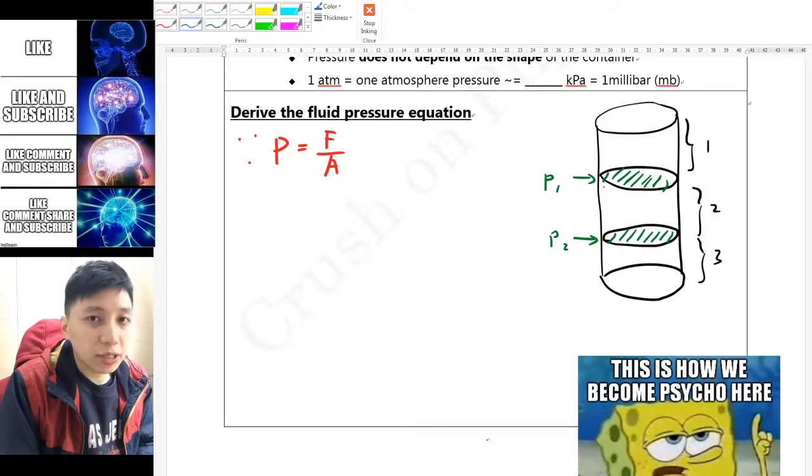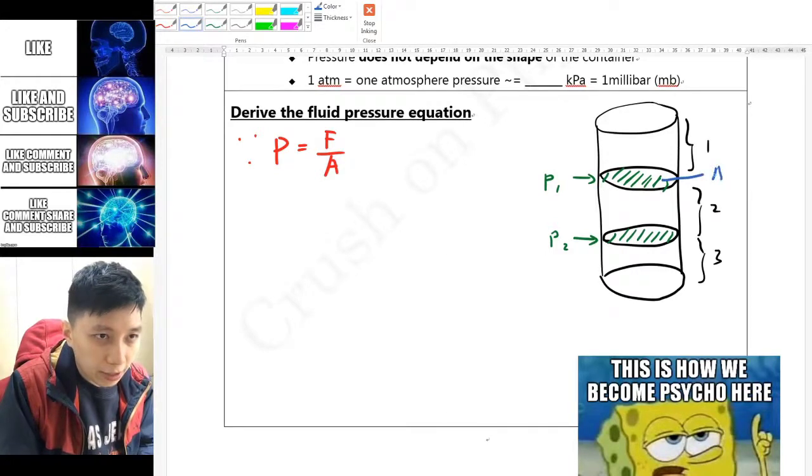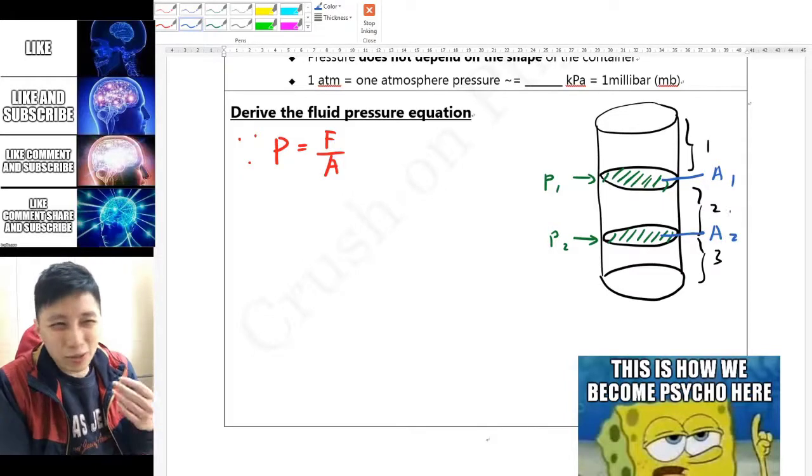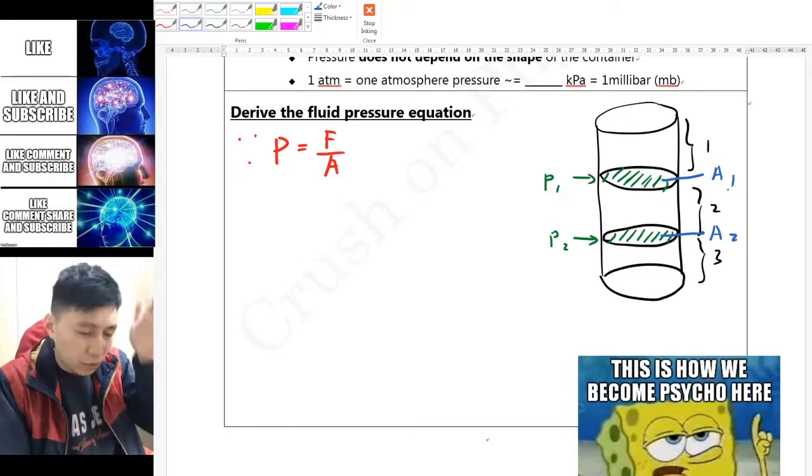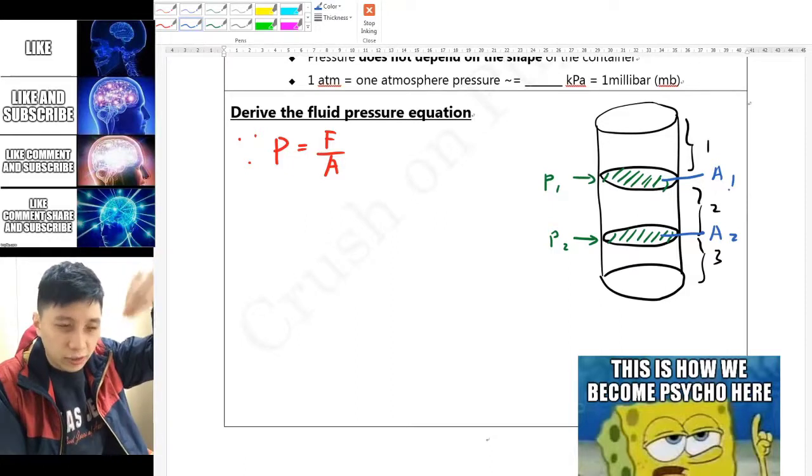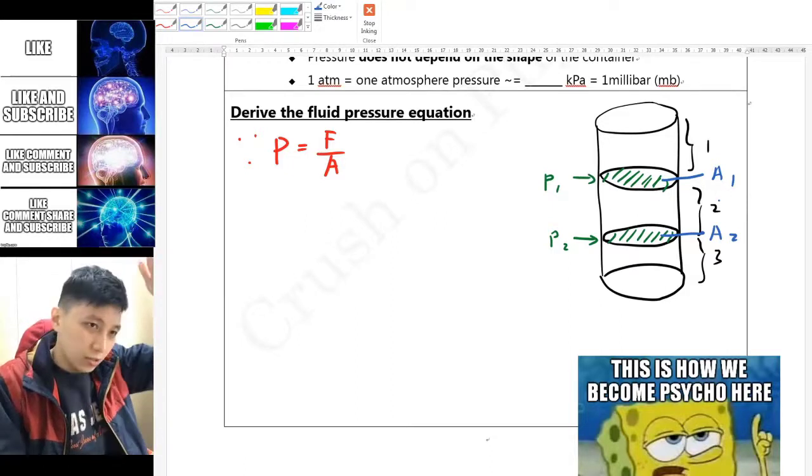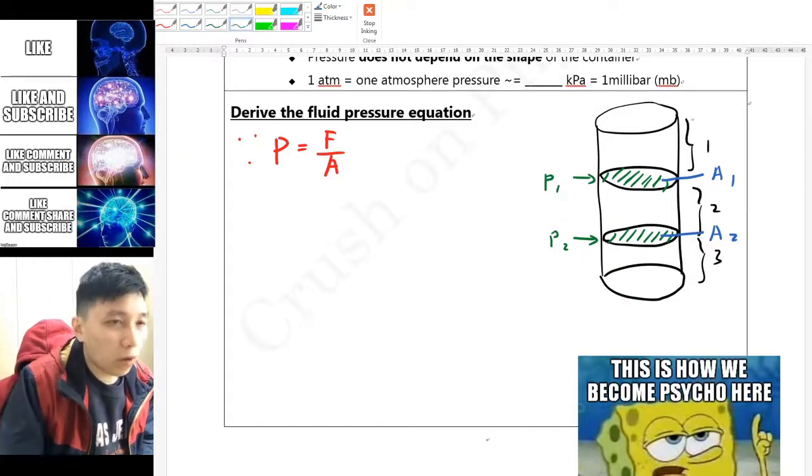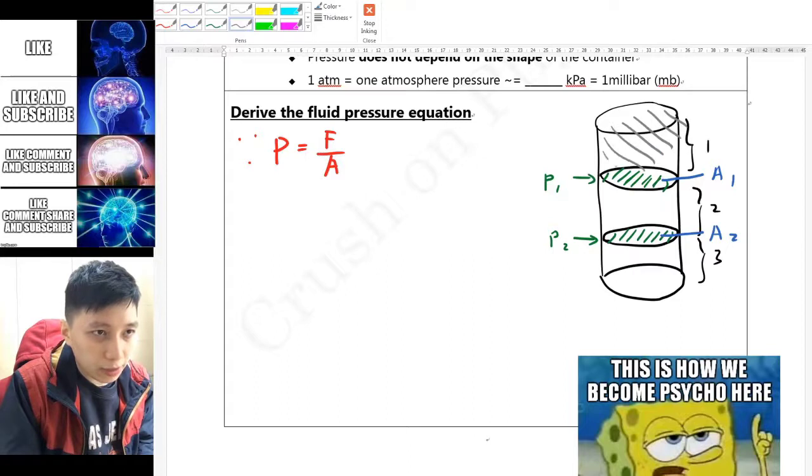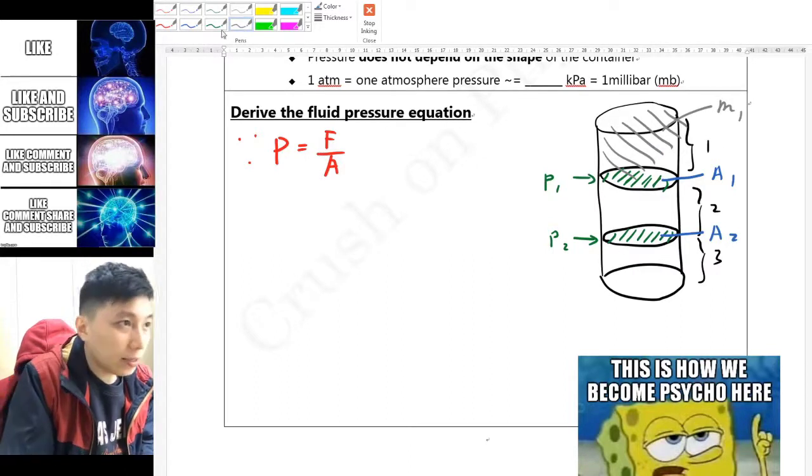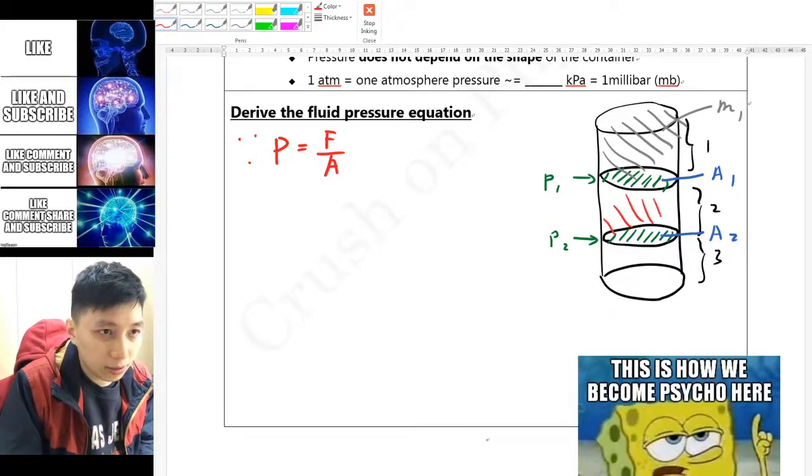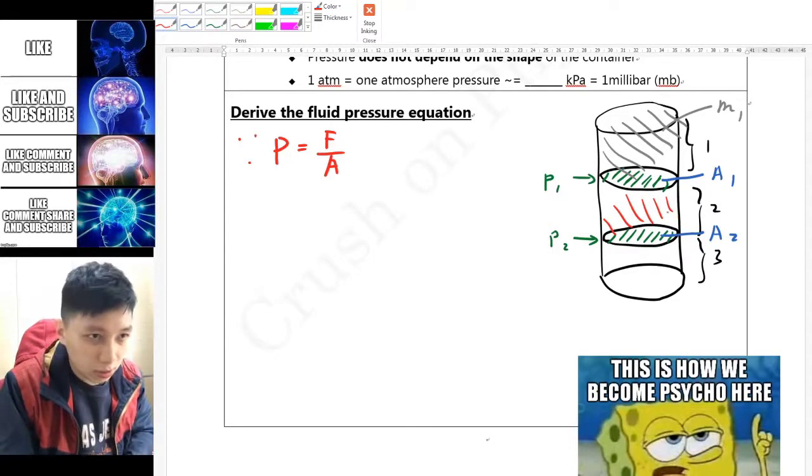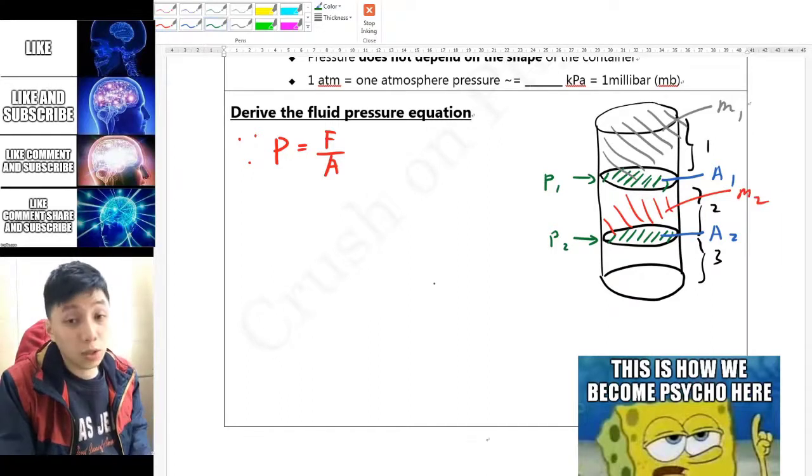To make my presentation easier I would define the area here as A1, the area here as A2, and in fact A1 and A2 are the same because it's a cylinder. We only consider the force that is acting on this surface and that is only the weight. The other thing that I would need to annotate first is the mass here so I'll call it M1.